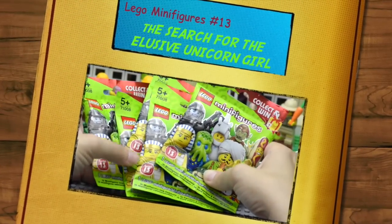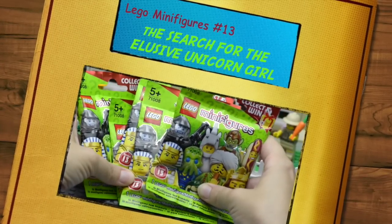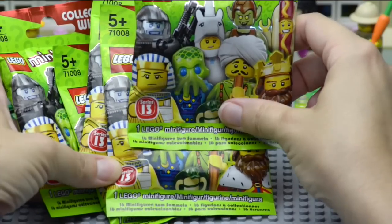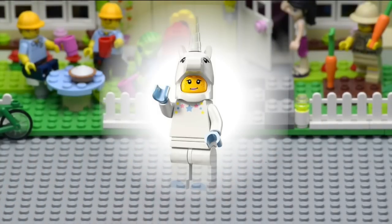Hello and here we are again with five more blind bags of the Lego minifigures from series number 13. Even though all of the minifigures are gorgeous, I am particularly looking for the unicorn girl and she's quite hard to find.